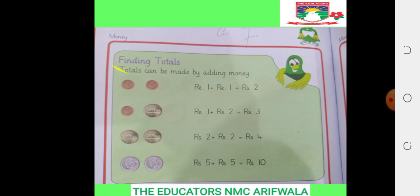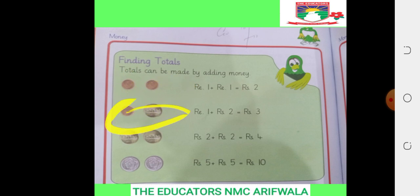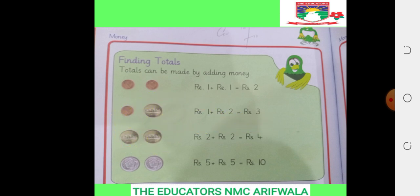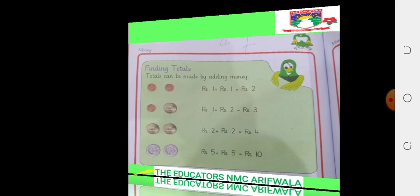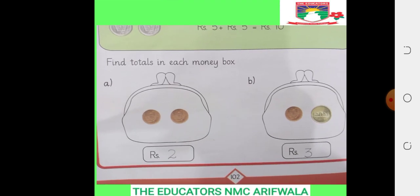Our classwork is finding totals. Total can be made by adding money. For example: 2 coins and 1 coin — total 3 coins. 2 coins and 2 coins — total 4 coins. 5 coins plus 5 coins — total 10. Now today our work is to find the total money.